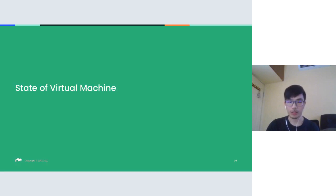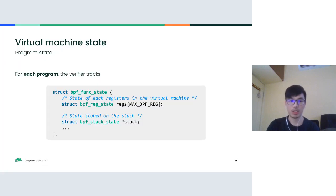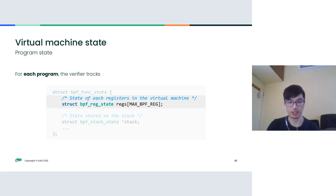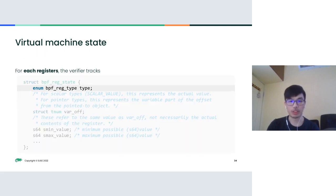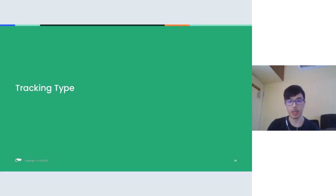To see how states are tracked, let's look at the structure used for tracking the virtual machine. For each program, the BPF verifier has a `bpf_func_state`, and within it the main part is an array of `bpf_reg_state` — that's where the interesting part is. The `bpf_reg_state` tracks what is stored in each register. For now, we're most interested in the type field, which brings us to type tracking.